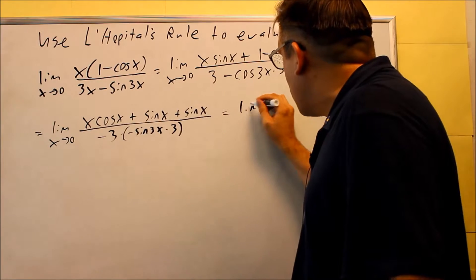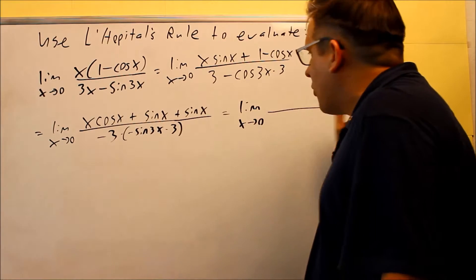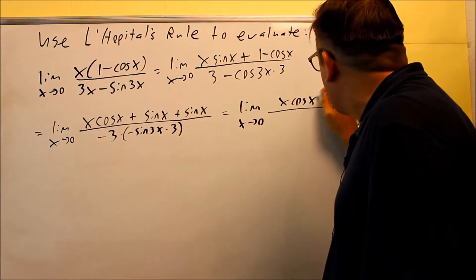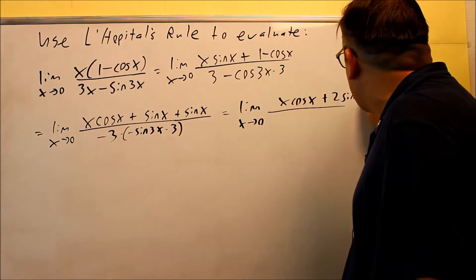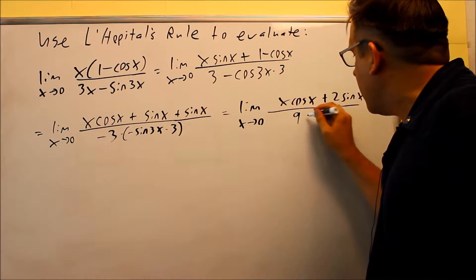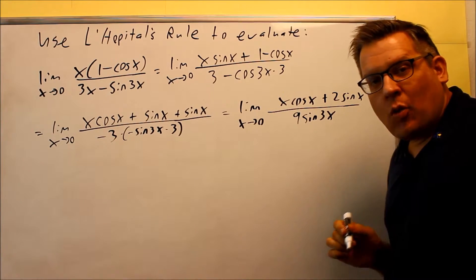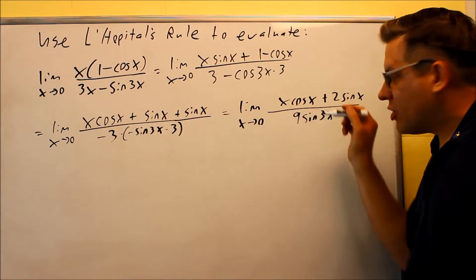Let's do a simplifying step first, before we plug the 0 in. Here, we're going to do limit x goes to 0. Let's simplify the top, x cosine x plus 2 sine x. And then, down below, negative negative will give you a positive 9, and then sine 3x.